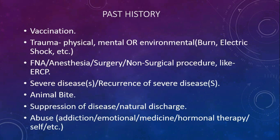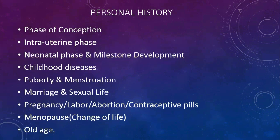Role of history in anamnesis — it has three parts: past, personal and family. In past history: vaccination, trauma — physical, mental or environmental like burn, electric shock etc. — FNAC, anesthesia or surgery, non-surgical procedure like ERCP, severe disease or disease age, recurrence of severe diseases, any animal bite, suppression of disease or natural discharge, abuse especially addiction, emotional, medicinal, hormonal therapy or self-abuse. In personal history: phase of conception, intrauterine phase, neonatal phase, milestone development, childhood diseases, puberty and menstruation, marriage and sexual life, pregnancy, labor, abortion, contraceptive pills, menopause and history of old age.